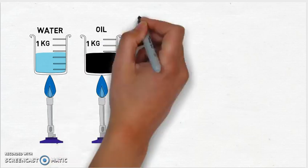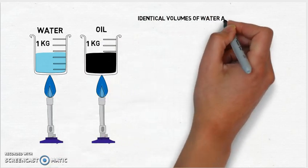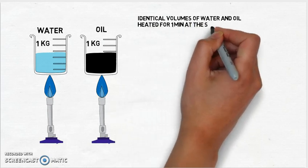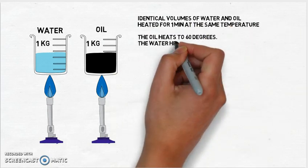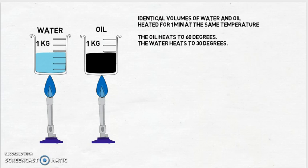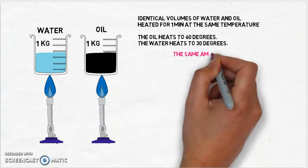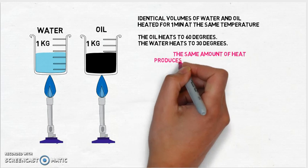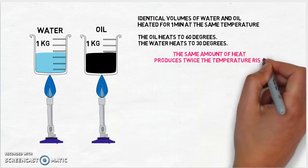What we would actually find in this experiment is that even though I've got identical volumes of water and oil and they're both heated for the same amount of time, so for one minute, the oil will actually heat up to 60 degrees while the water will only heat to 30. So the same amount of heat produces twice the temperature rise in oil than it does in the water.